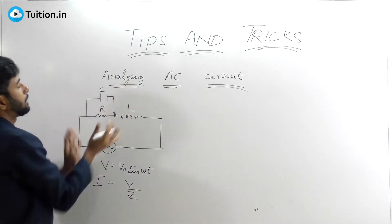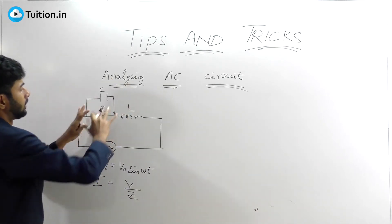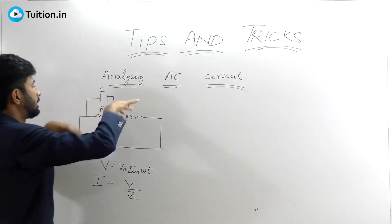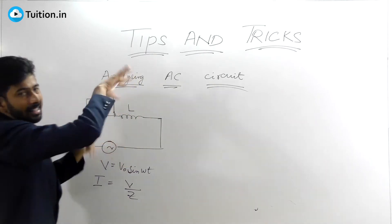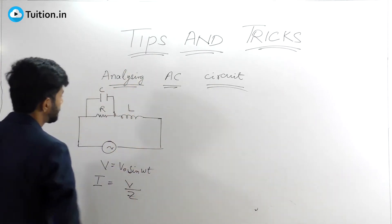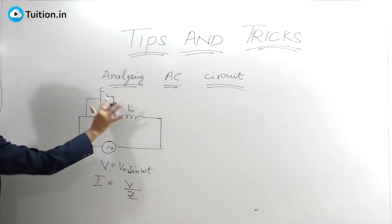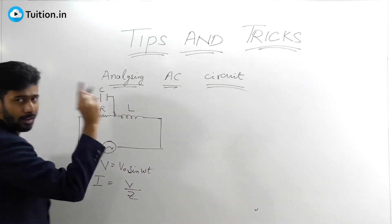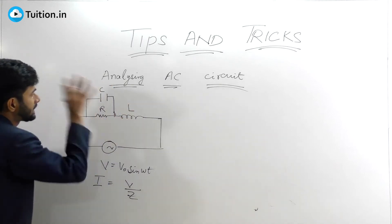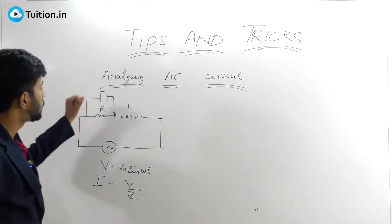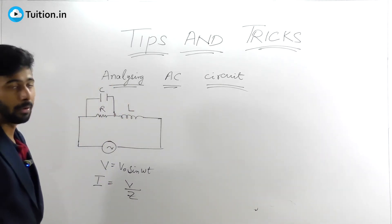Let me take an arbitrary circuit. This RLC — you can have any number of C's and L's in various positions. But I've taken this particular case where I have one L, one C, one R, and they are placed like this. How do you solve this particular problem?